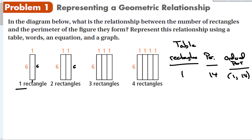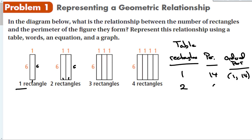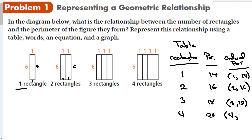For two rectangles, adding up all the sides gives a perimeter of 16, so the ordered pair is (2, 16). For three rectangles, we get a perimeter of 18, giving ordered pair (3, 18). And for four rectangles, we get 20, so (4, 20).